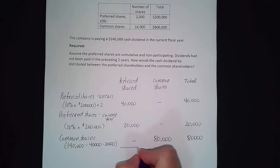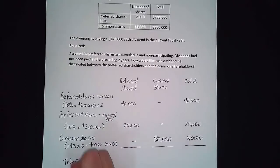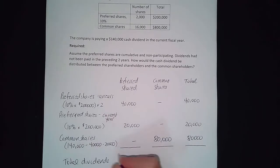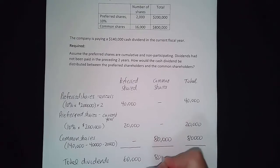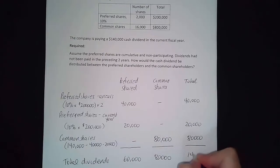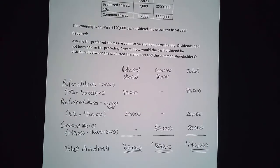Now we can add them up to determine the total dividends. For the preferred shareholders: $60,000. For the common shareholders: $80,000. And the total being paid is $140,000.